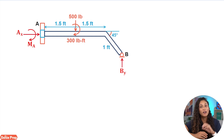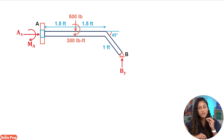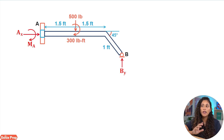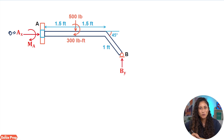This is how our free body diagram is going to look. At B, since we have a roller, there is one reaction: the vertical reaction By. At A, we have a fixed support, so we're going to have a moment at A. However, Ay is zero because the collar moves vertically, and Ax is also zero because there are no forces in the X direction.